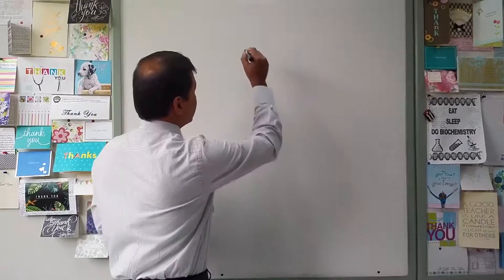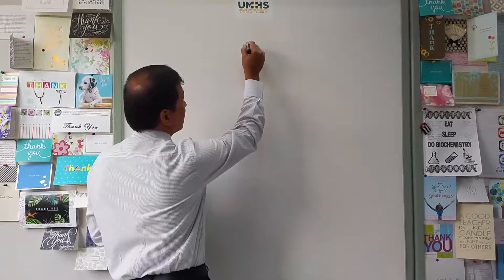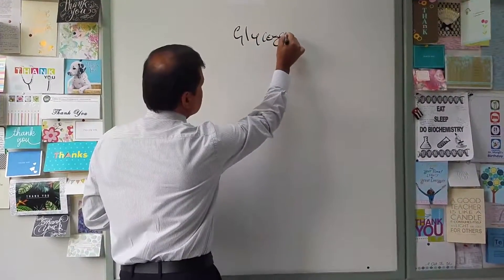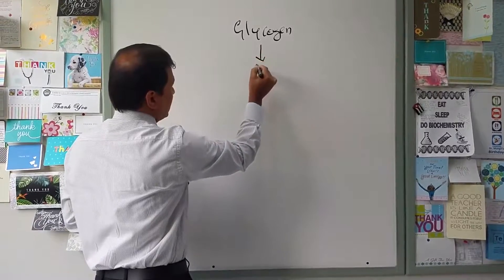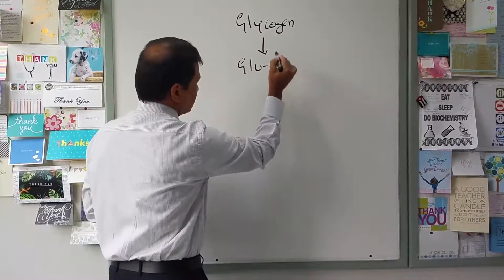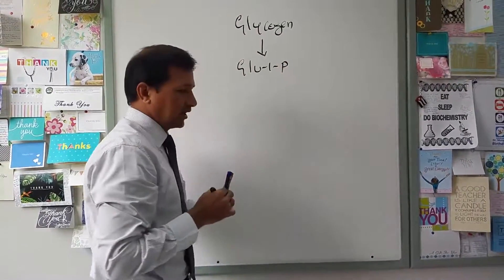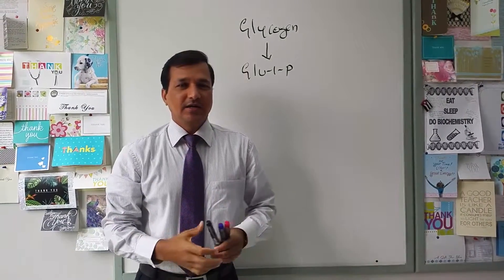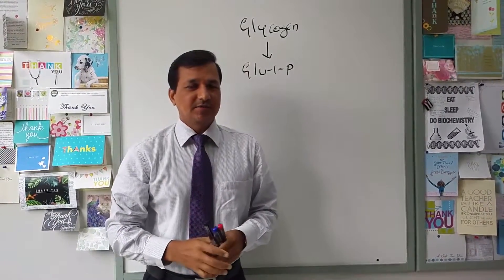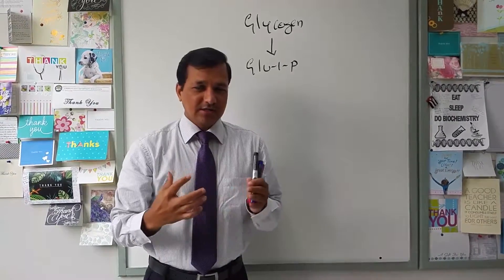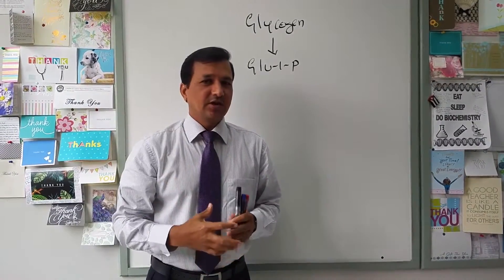Glycogen is broken down into glucose-1-phosphate, and that is done by the glycogen phosphorylase enzyme and the debranching enzyme. There is a separate video on glycogen degradation and glycogen synthesis you can refer to.